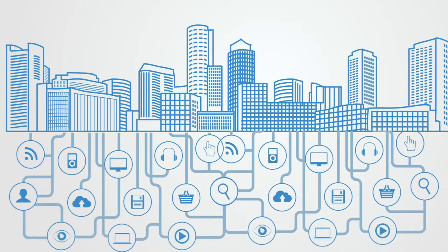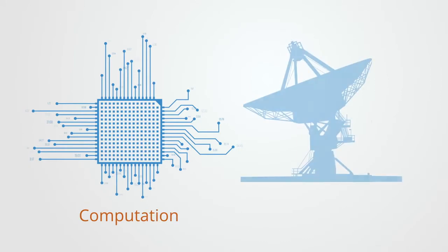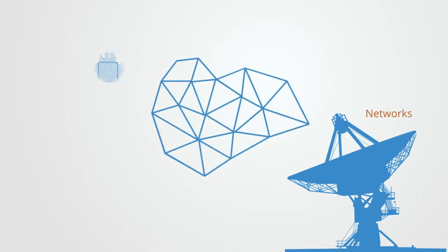An information economy is an advanced form of economic system where technology and economic organization converge in new ways. To understand this transformation, it is important to understand the change in underlying technology. The two central aspects of information and communications technology are the analytical computational capabilities of the microprocessor and the global connectivity enabled by telecommunications networks. These two capacities combine to enable a whole new structure to economic organization.